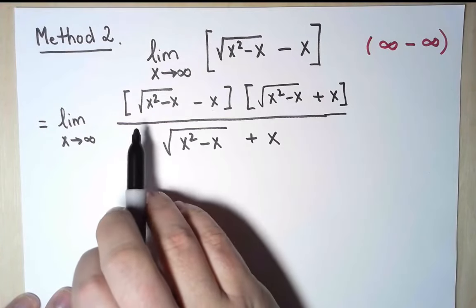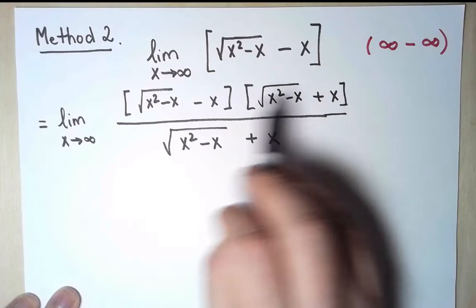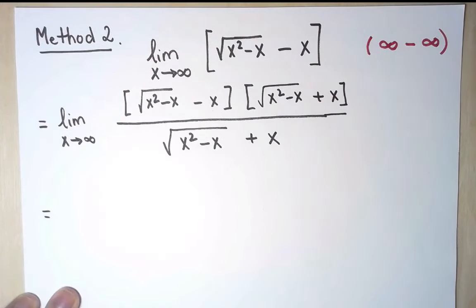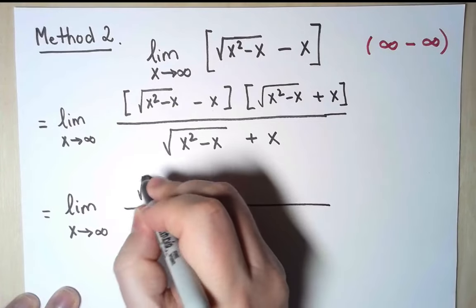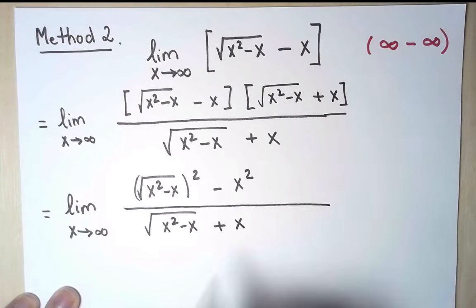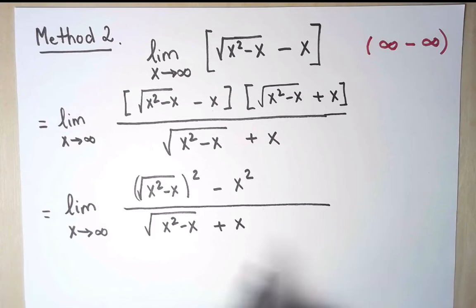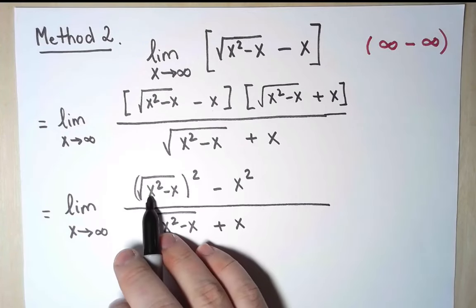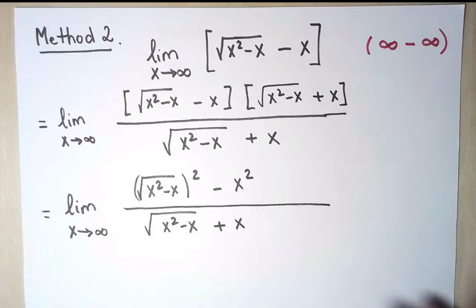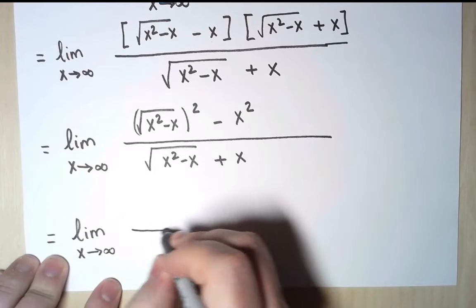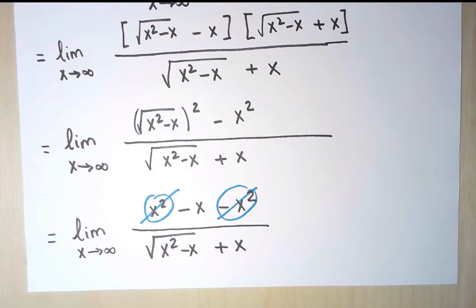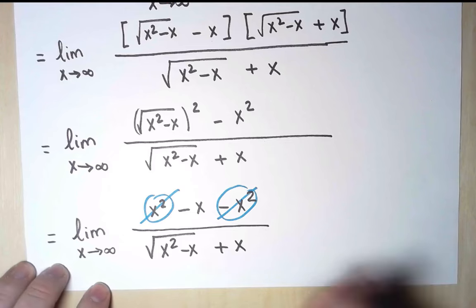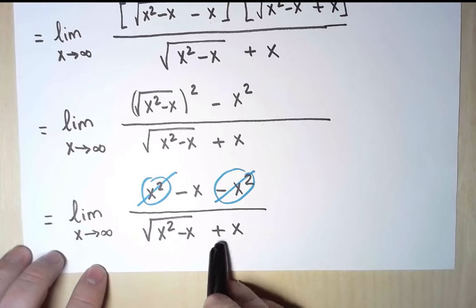The reason this strategy helps is because now, in the top, I have the difference times the sum, and I know that that will simplify as the difference of squares. So now I can get rid of the square root at the top, and I can simplify this x squared with this other x squared.